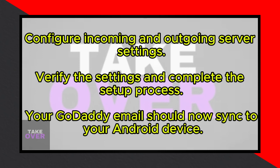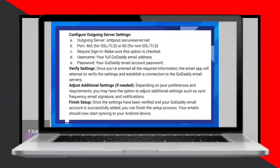Depending on your preferences, you may have the option to adjust additional settings such as sync frequency, email signature, and notifications. Once the settings have been verified and your GoDaddy email account is successfully added, you can finish the setup process. Your email should now start syncing to your Android device seamlessly.